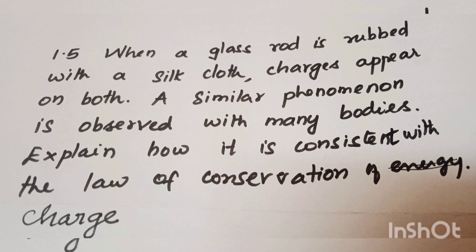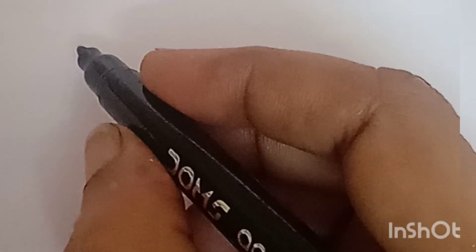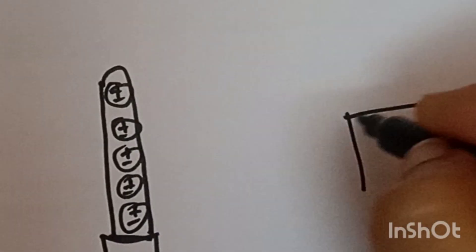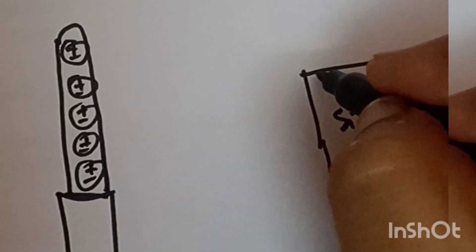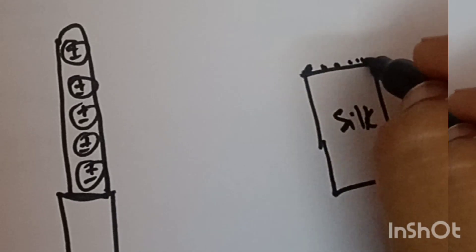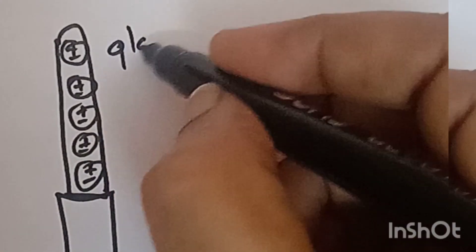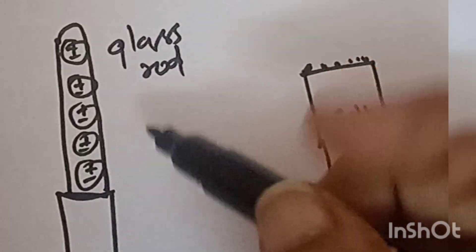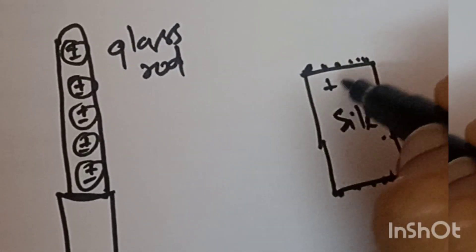Conservation of charge means charges can be neither created nor destroyed. Now let's take a glass rod. The glass rod is neutral with equal positive and negative charges. For example, it has 5 positive and 5 negative charges. This is a silk cloth. The silk cloth is also neutral with equal positive and negative charges inside.